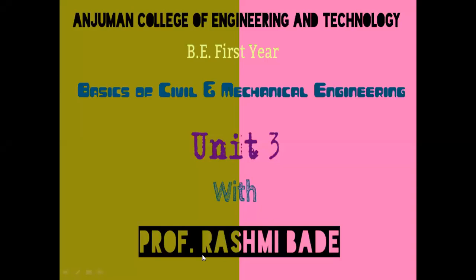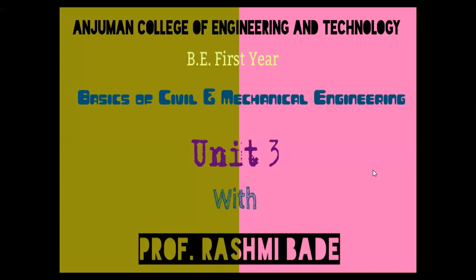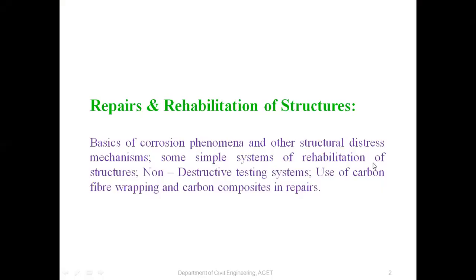In class today we are going to learn about Unit Number 3 of Basic of Civil and Mechanical Engineering. Unit Number 3 comprises the following things: repair and rehabilitation of structures, basics of corrosion phenomena and other structural distress mechanisms, simple systems of rehabilitation of structures, non-destructive testing systems, and use of carbon fiber wrapping and carbon composites in repair.